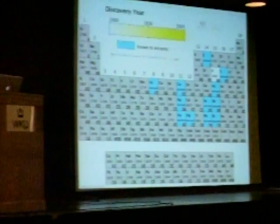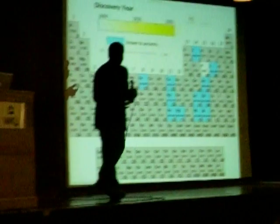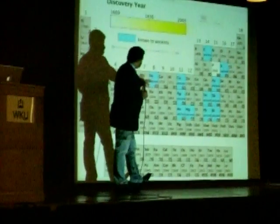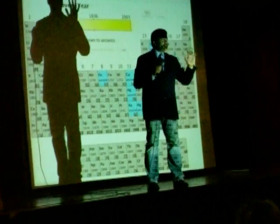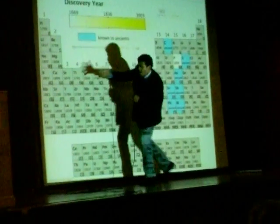You can do fun things with this diagram. Another thing is, you can see which elements were known to the ancients — they didn't have a discovery date. There are ten elements: iron, copper, silver, gold, mercury, lead, tin, antimony, arsenic, carbon, silicon. Those are the only elements known to the ancients. And I can slide the discovery year threshold, and you can watch these elements show up on the table.